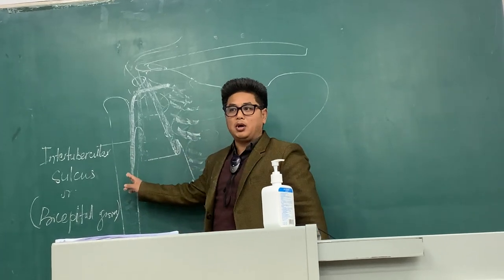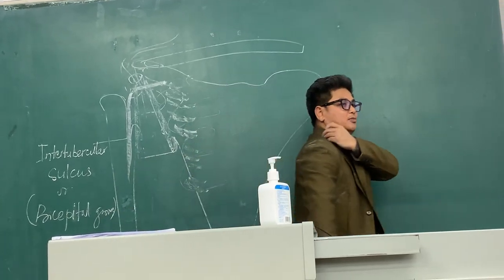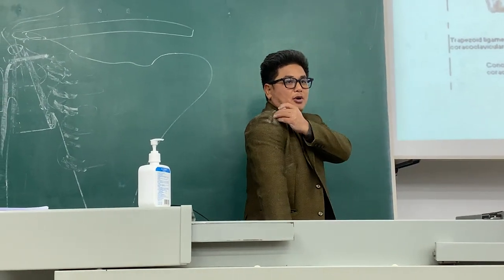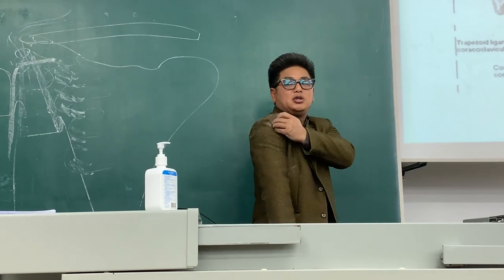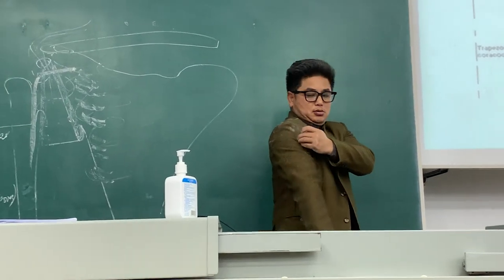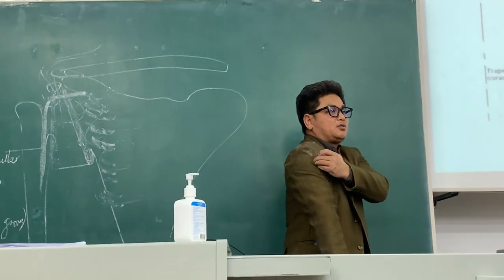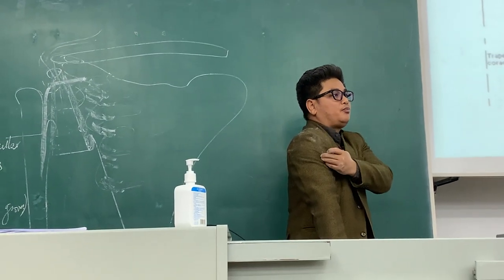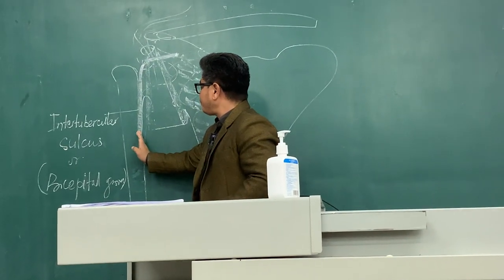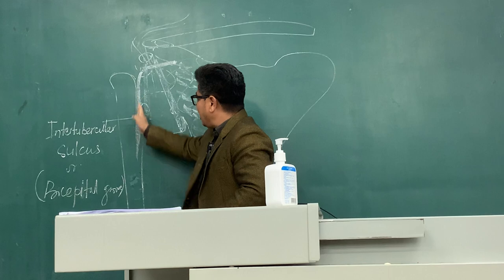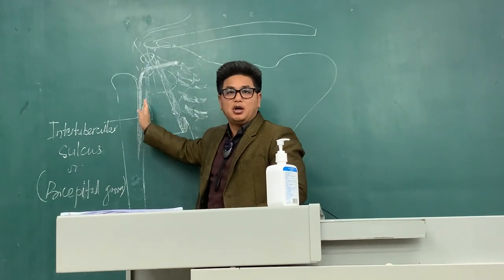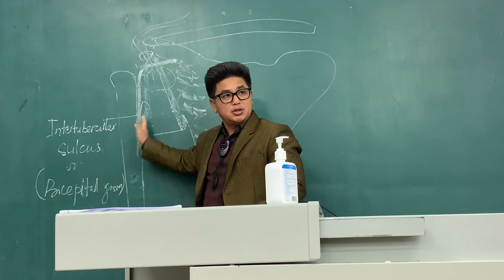So the long head of biceps brachii muscle is going through this area — here is the sulcus. Right from here, this long head of biceps muscle is going to carry out. The tendon is going to be here. So this is the long head of biceps brachii muscle coming through this area.